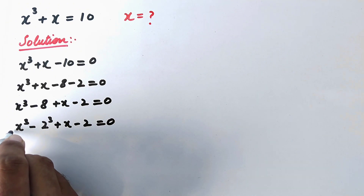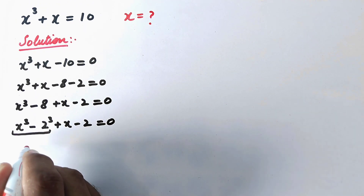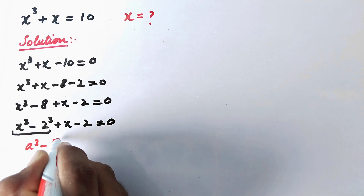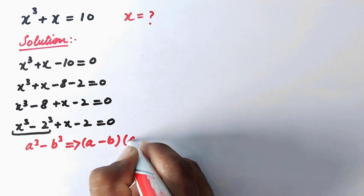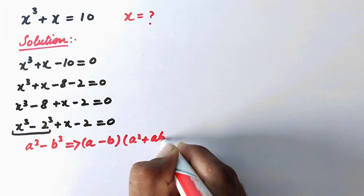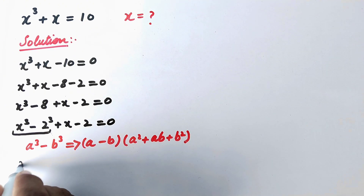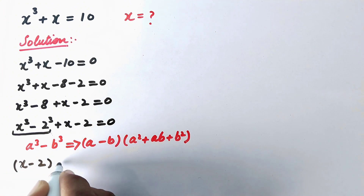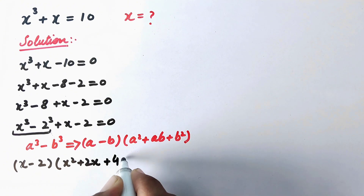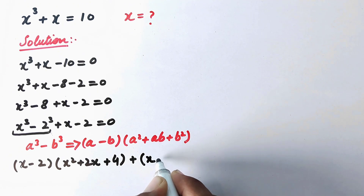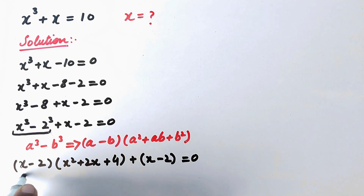Now we can see there are two values having a cube, so we apply the algebraic formula: a cubed minus b cubed equals (a minus b)(a squared plus ab plus b squared). Applying this formula, we get (x minus 2)(x squared plus 2x plus 4) plus (x minus 2) equal to 0.